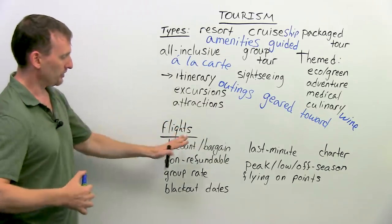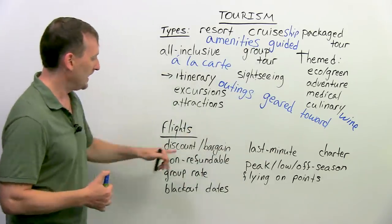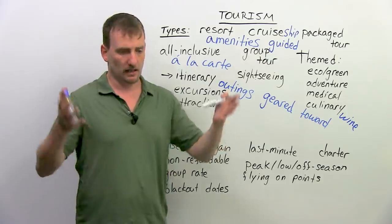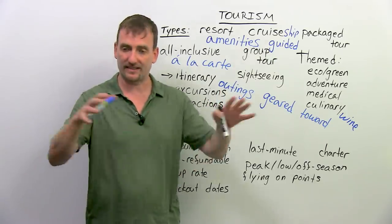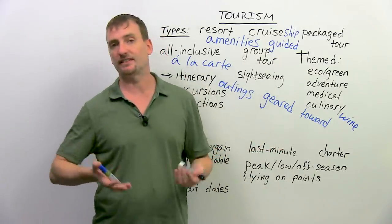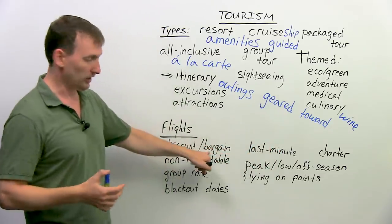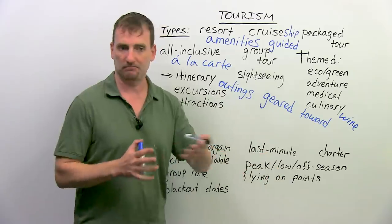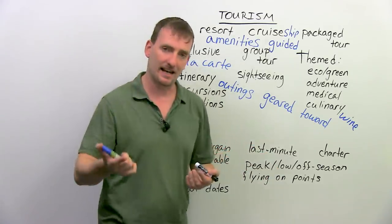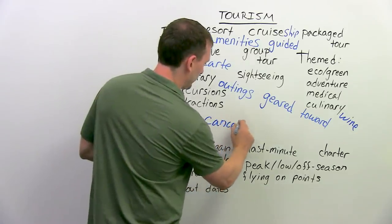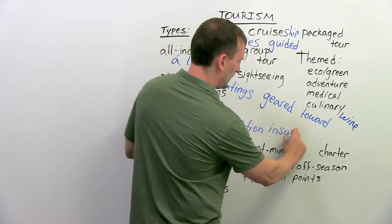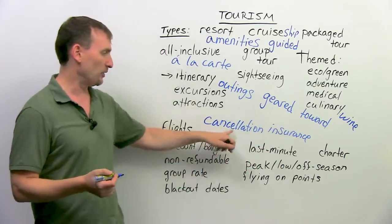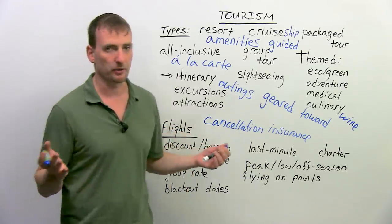We're also going to talk about flights — how you're going to get to all these tourist destinations. You can buy discount or bargain flights. These are usually much cheaper — sometimes they're just leftover seats. An airline has sold maybe 80-90% of the seats, they have 10% left, and they offer them at a very discounted price just to fill the plane. They're also called bargain tickets. You have to be very careful because these are generally non-refundable — once you buy the ticket, if you cancel, you don't get your money back unless you bought cancellation insurance.